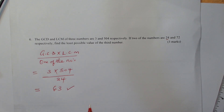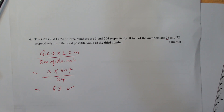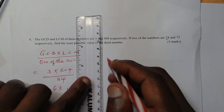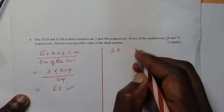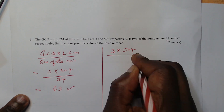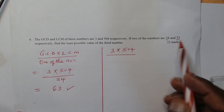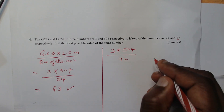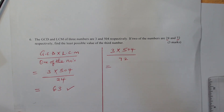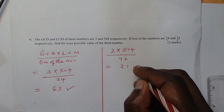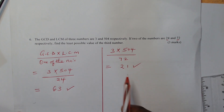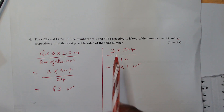So 63 is a possible value of that number. Now the other possible value will be given by the same process: GCD 3, multiplied by 504, now divided by the other number which is 72. When you work out this, it will give 21. So 21 is a possible value of the third number.